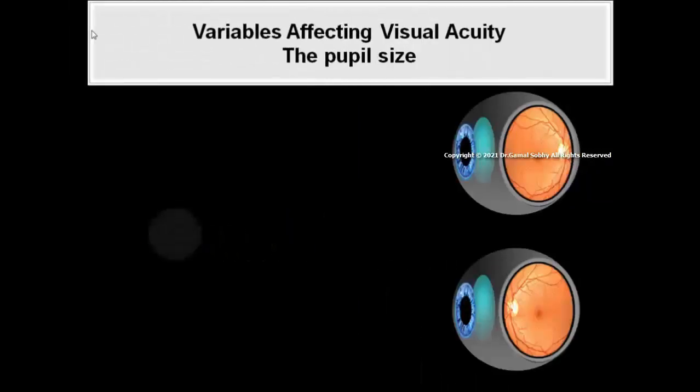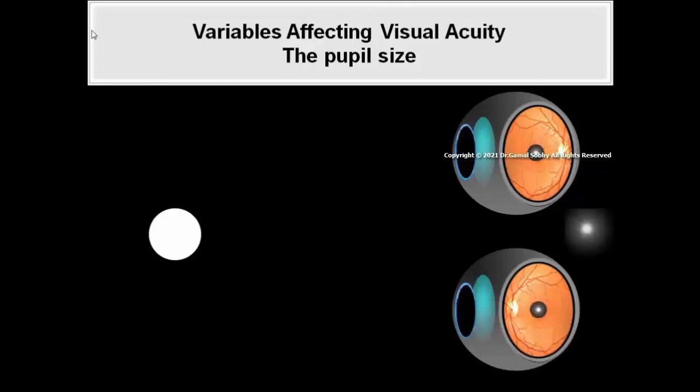5. The pupil size is also involved in the effect of luminance on visual acuity. 6. A large pupil allows more light to enter the eye but increases the effect of the optical aberrations.